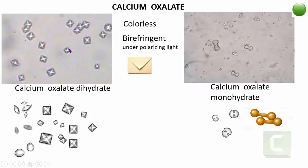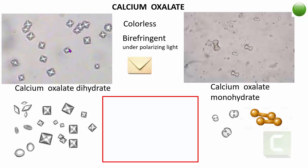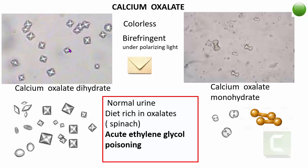Remember, calcium oxalate crystals are colorless. They can be seen in normal urine, in people who have ingested a diet rich in oxalates such as spinach, or with acute ingestion of ascorbic acid. Most importantly, you need to know that they are seen in acute ethylene glycol poisoning — both dihydrate and monohydrate forms can appear. Finally, they are seen in urolithiasis, as calcium oxalate stones are the most common type of renal stones.